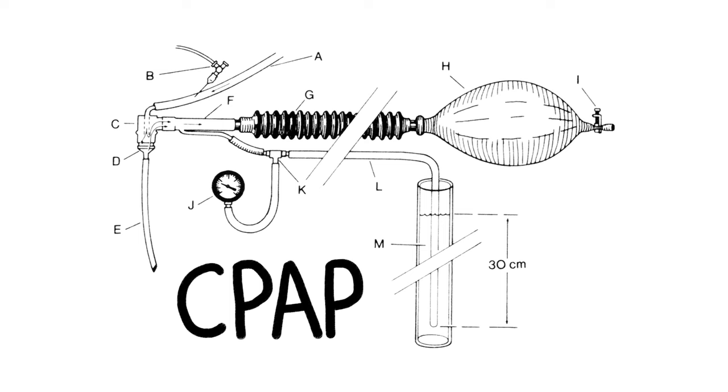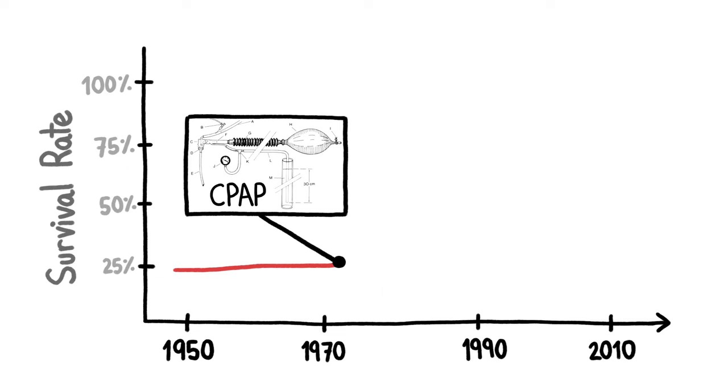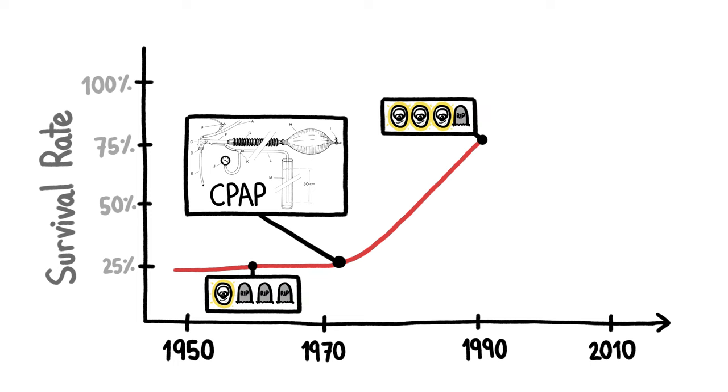Someone invented a device called a CPAP that did just that, and in the United States, the survival rate of preemies with RDS soared from just 1 in 4 to 3 in 4.